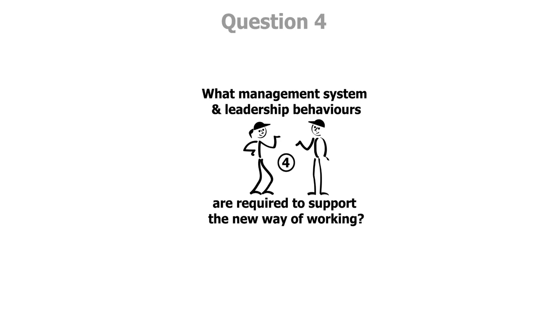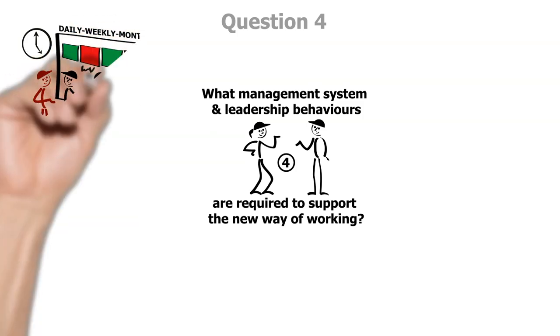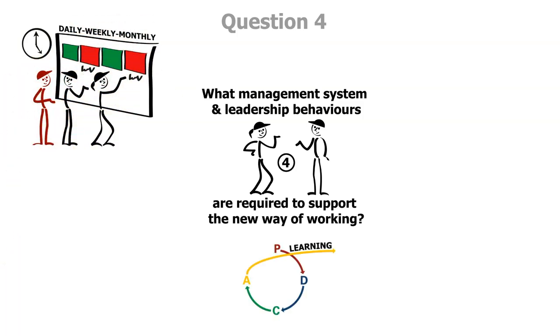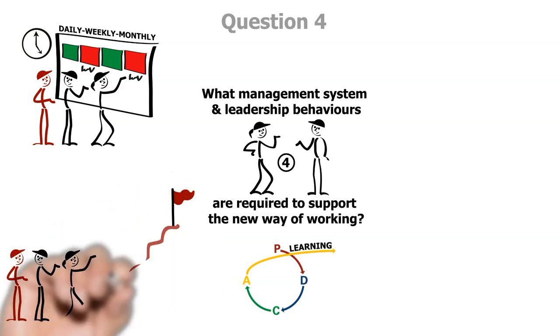What management system and leadership behaviors are required to support the new ways of working? The design of the management system activities and the behaviors needed is key to ensuring stability and making changes in the work by following the principle of Plan Do Check Act at every level. They are also intrinsic to leaders supporting people in sustaining progress and making further improvement.